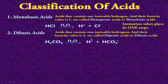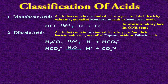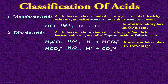Out of these 2 hydrogen atoms, only one will ionize in the first step. The second hydrogen remains with the remaining negative ion, and this second hydrogen will be removed in the second step. After removal of the second hydrogen ion, it becomes the carbonate ion CO₃²⁻. So its ionization takes place in two steps. In the first step, only one hydrogen is removed — it has a positive charge, so the remaining radical has a negative charge.